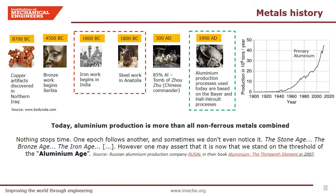The plot on the right is from Web of Science, which shows an increasingly growing trend in the areas of research of PEO, also known as MAO, compared to competitive processes such as hard anodising and HVOF processes. This timeline of metals shows that aluminium is relatively a new invention compared to copper, bronze and iron. Aluminium's industrial production started not until early 1900 AD and despite this, the production of aluminium has grown exponentially over the last 100 years. Today, aluminium production is more than all non-ferrous metals combined and is considered the second king of metals after steel.